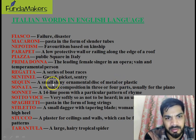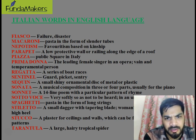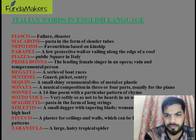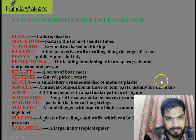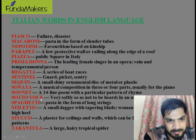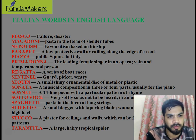'Sequin' is a small shiny ornamental disc of metal or plastic. 'Sonata' is a musical composition in two or three parts, basically used with piano. 'Sonnet' is a 14-line poem, as most people know. 'Sottovoce' means to speak very softly so as not to be heard, in an undertone — to murmur basically.